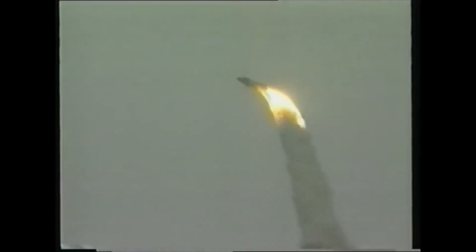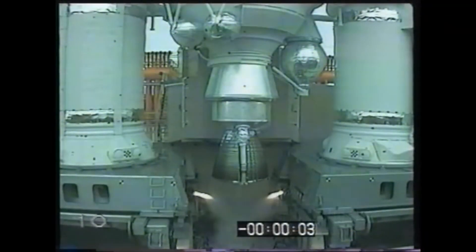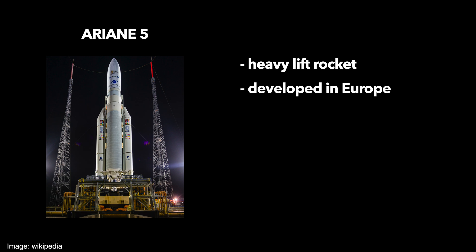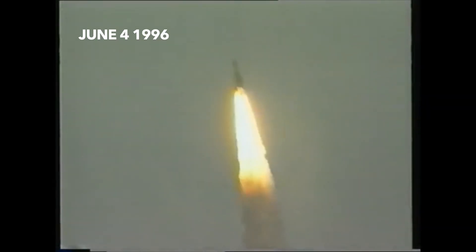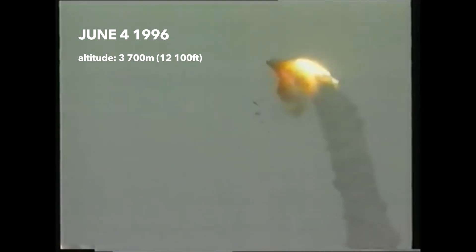Number one: the Ariane 5 rocket explosion. The Ariane 5 rocket explosion in 1996 is a classic example of how a small engineering and software development oversight can lead to disastrous results. The Ariane 5 was a heavy-lift rocket developed in Europe by the ESA, used to deliver satellites. But the first test didn't go to plan — on the 4th of June 1996, at an altitude of 3,700 meters, the first Ariane 5 rocket left its path and exploded.